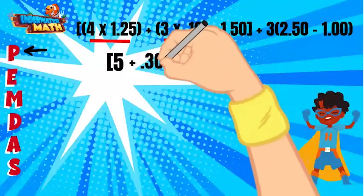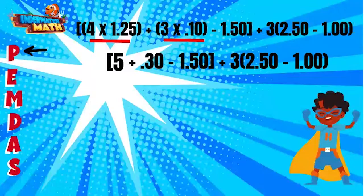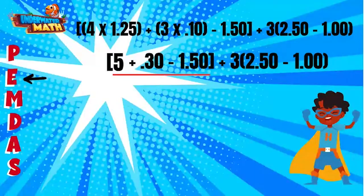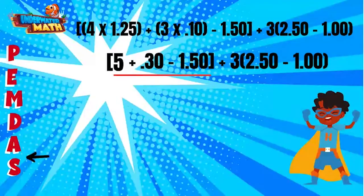Three times 0.10 is 0.30, so I can replace that part with 0.30. I am keeping the rest of my line the same. Even though we have another set of parentheses, I am going to finish my work inside the brackets first. Next in PEMDAS is exponents — we don't have any inside the brackets, nor do we have multiplication or division. We do have addition and subtraction: five plus 0.30 is 5.30, and 5.30 minus 1.50 is 3.80.